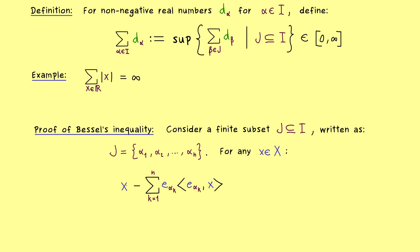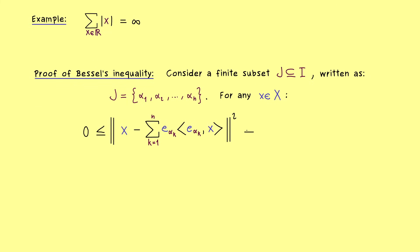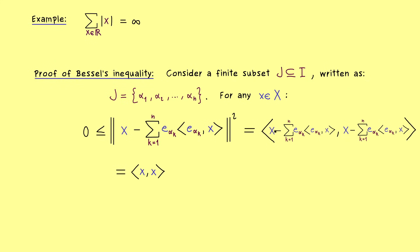The normal component has a length measured by the induced norm. We square it and know this is greater than or equal to zero — that is where the inequality comes in. Instead of the norm squared, we write the inner product with the same entry left and right. Using additivity in both components, we get four terms: x with itself, then x with the sum, then the sum with x, and finally the two sums together requiring a new index l.